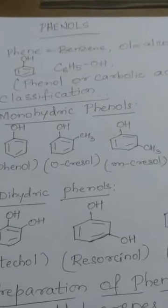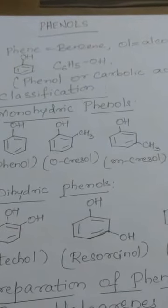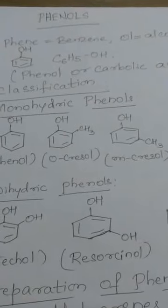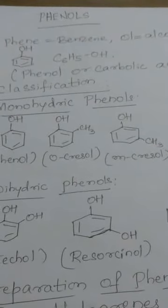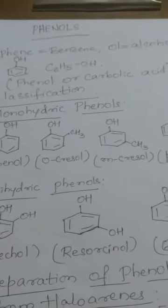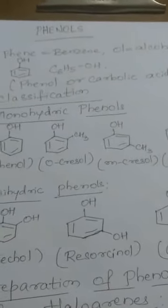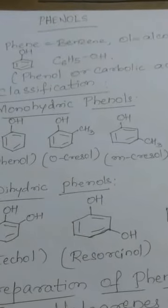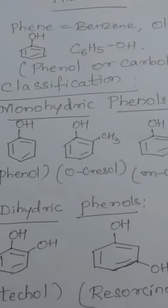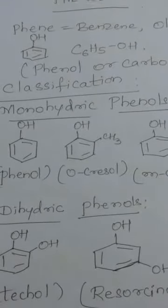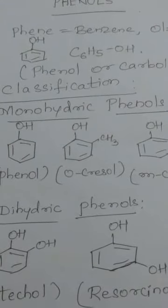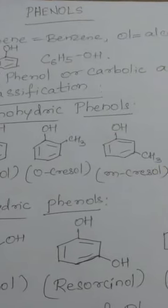Phenols are also hydroxy derivatives just like alcohols, but there is a difference here. Phenols are hydroxy derivatives of aromatic hydrocarbons. 'Phen' means benzene, 'ol' stands for alcohol. So phenols are hydroxy derivatives of aromatic hydrocarbons in which the hydroxy group is directly bonded to the aromatic ring. The simplest member is phenol itself, having the formula C6H5OH.